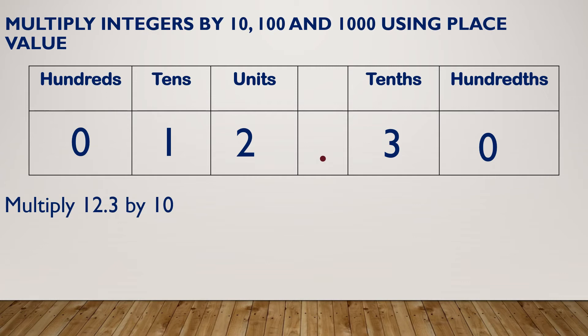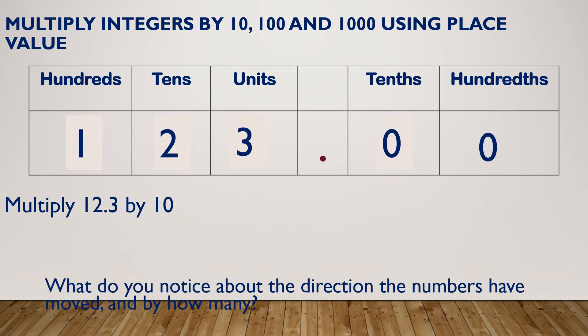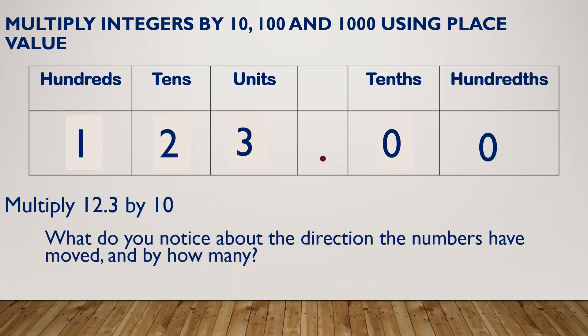So where that was a 10 before, that's now 100. Where I had 2 units, I've now got 2 tens. And where I had 3 tenths, I've now got 3 units. So as you can see, everything moves 1 space to the left. And it's moved 1 space because it's 1 zero.